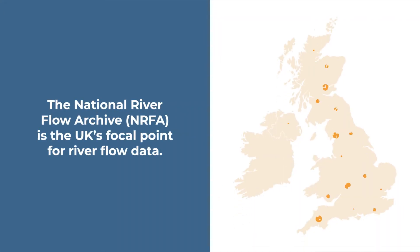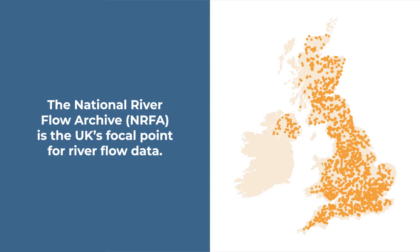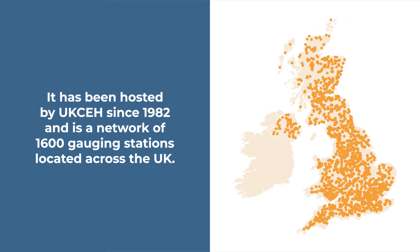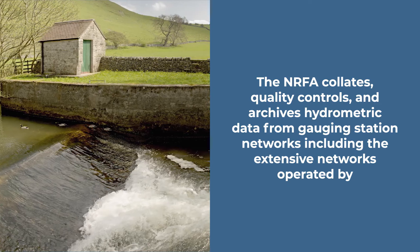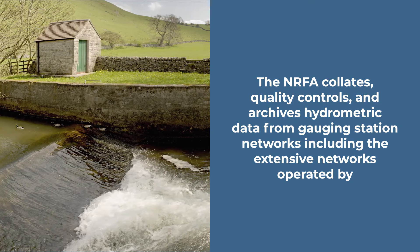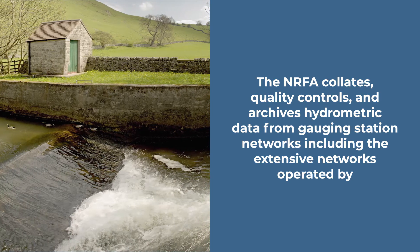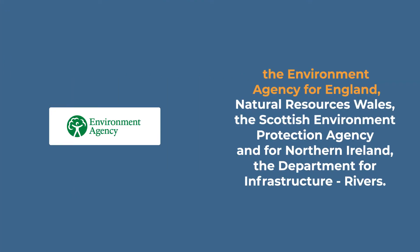The National Riverflow Archive is the UK's focal point for river flow data. It has been hosted by UK CEH since 1982 and is a network of 1600 gauging stations located across the UK. The NRFA collates, quality controls and archives hydrometric data from gauging station networks, including the extensive networks operated by the Environment Agency for England.